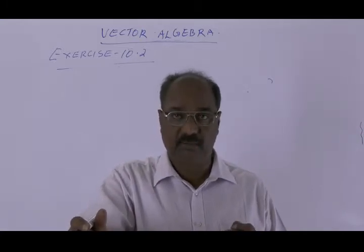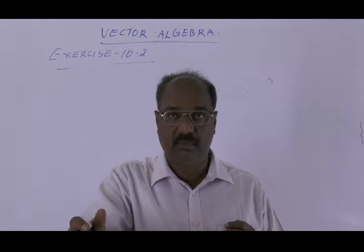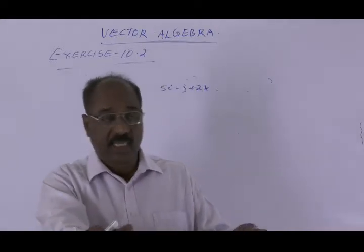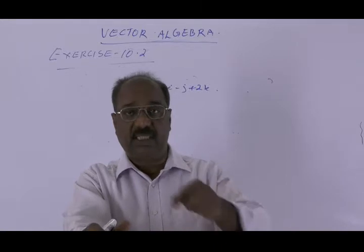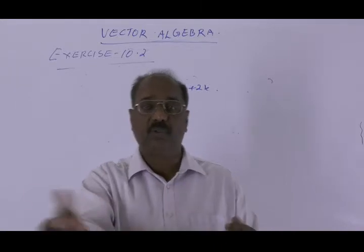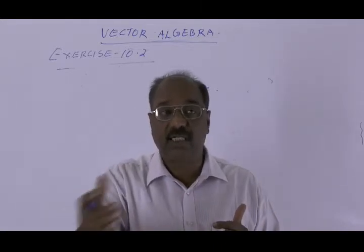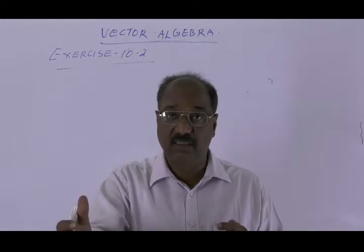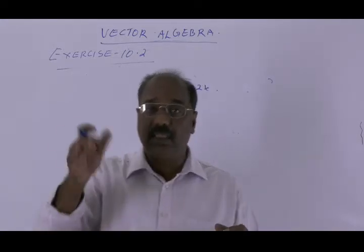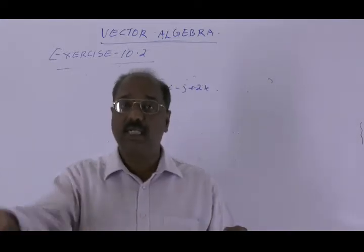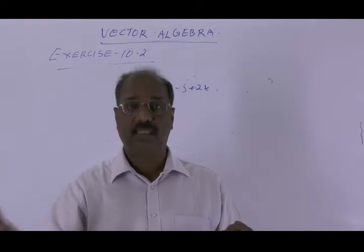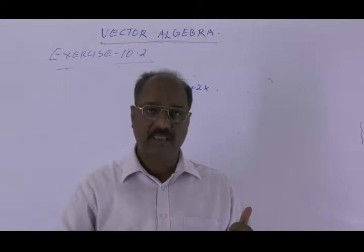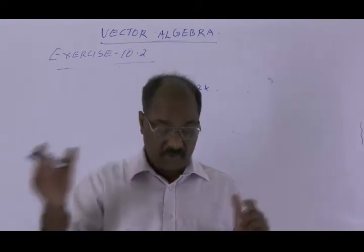Magnitude 8 units. To find the vector in the direction of a given vector with a given magnitude, first find the unit vector in the direction of the given vector, then multiply that unit vector by 8. You will get the required vector having magnitude 8. You can do it yourself.